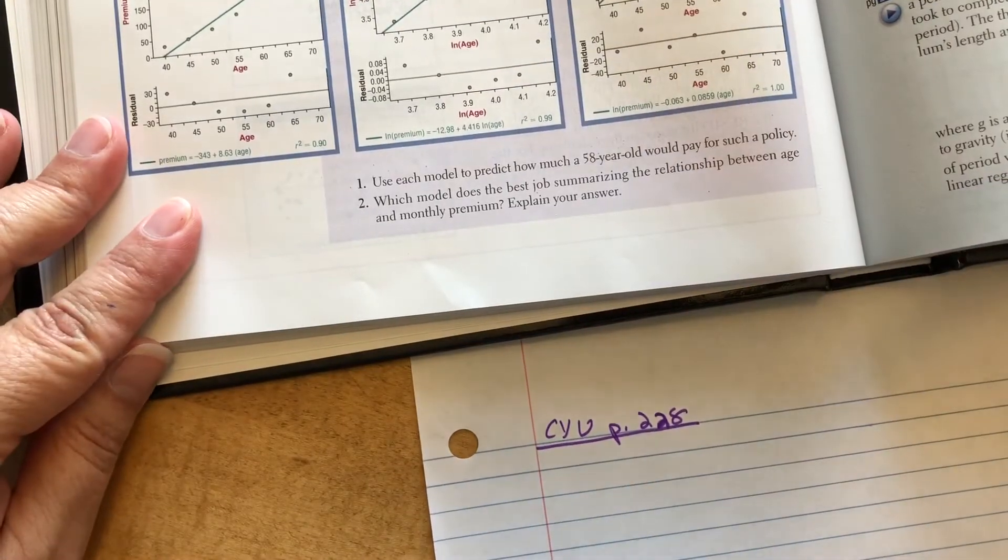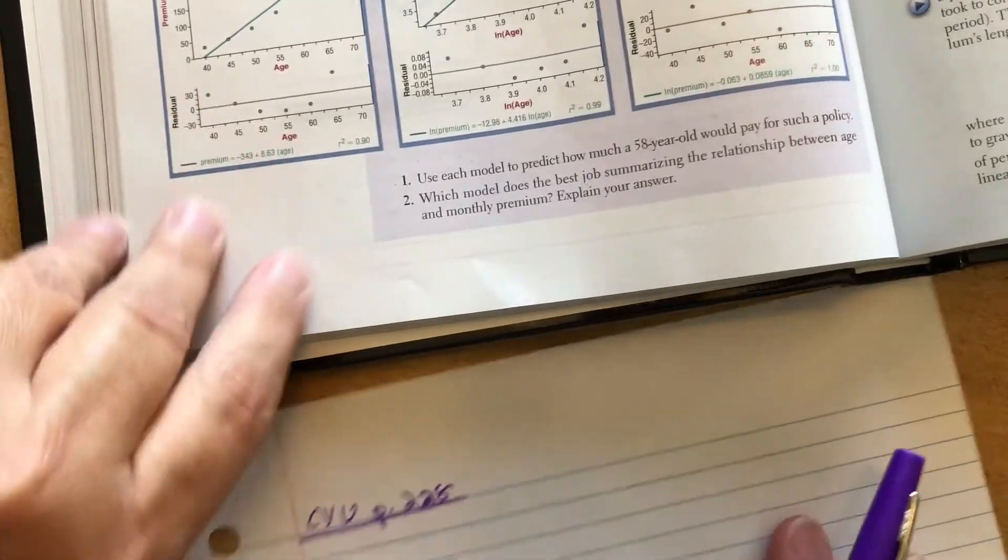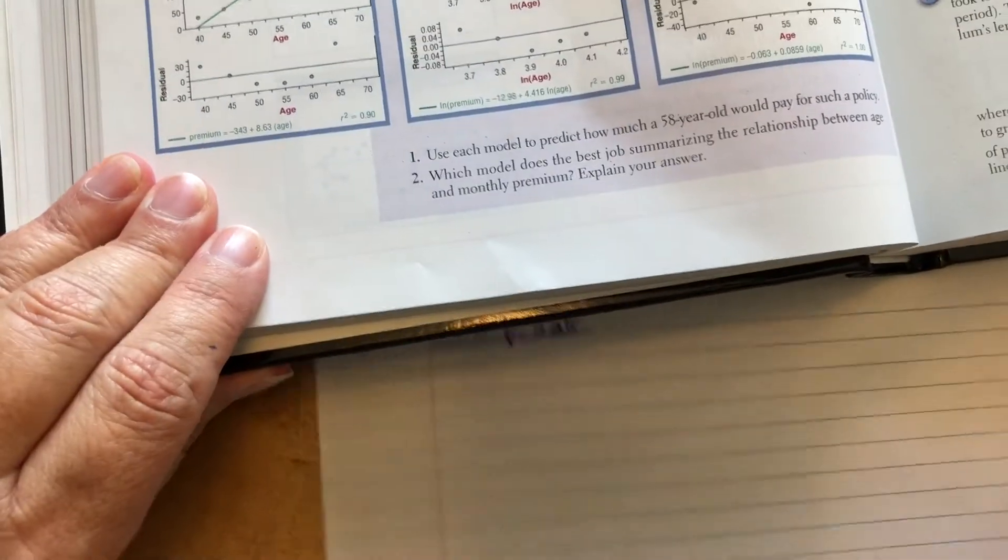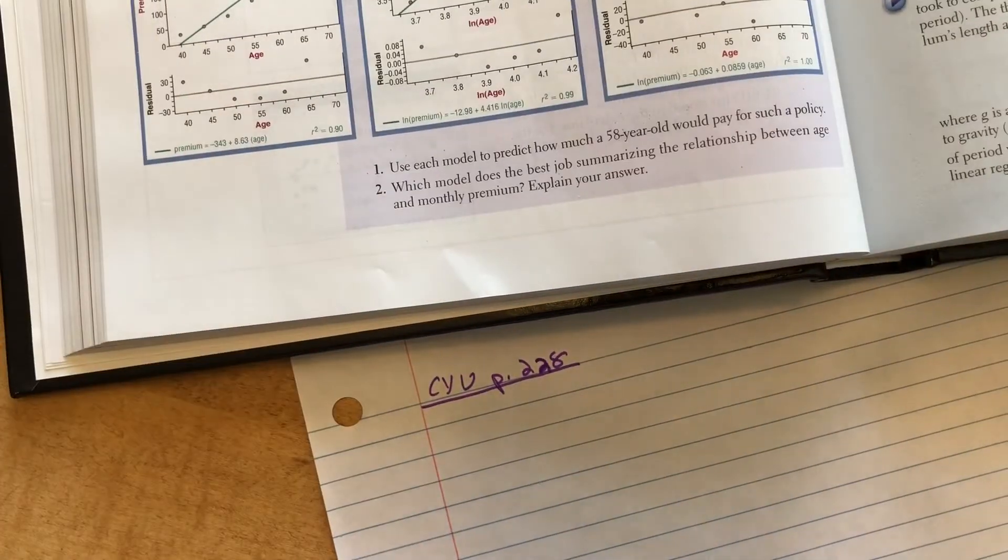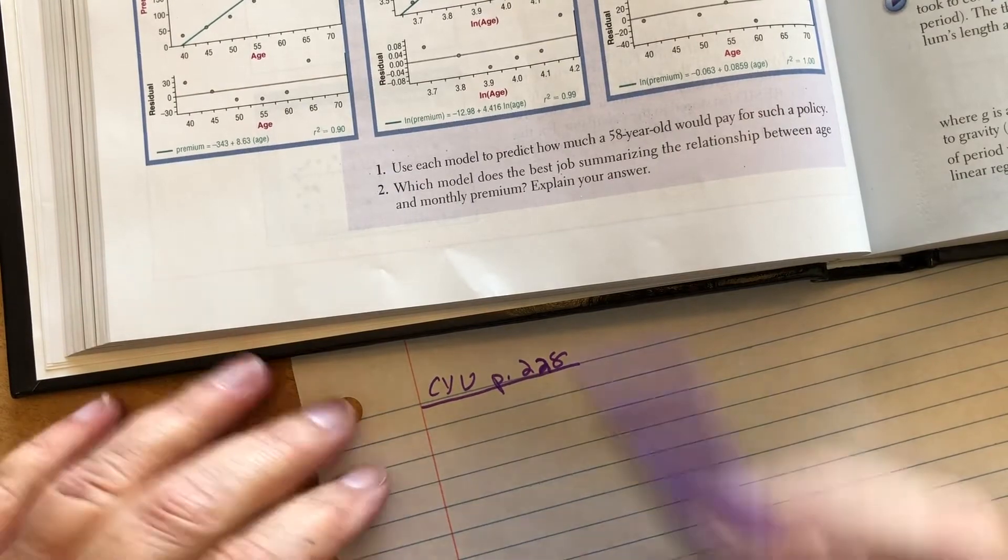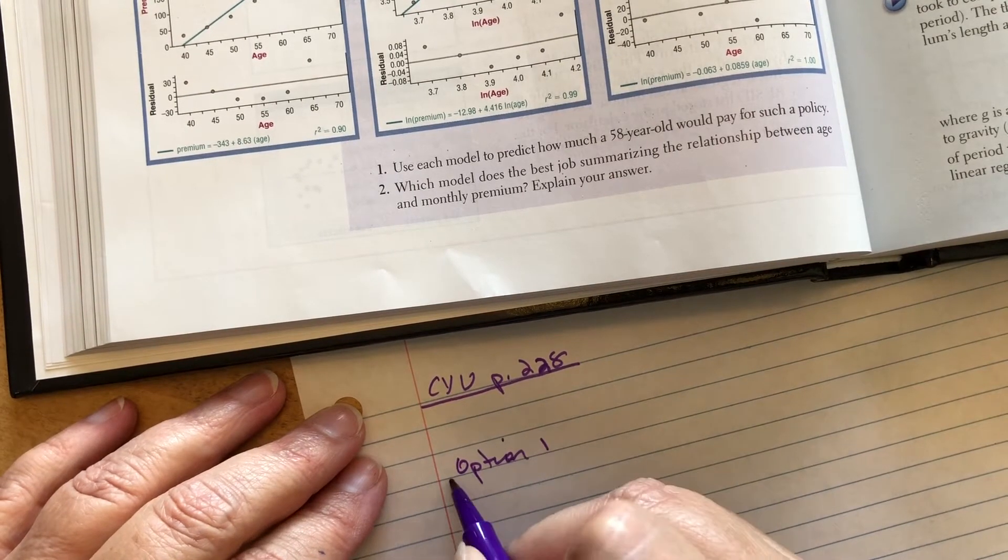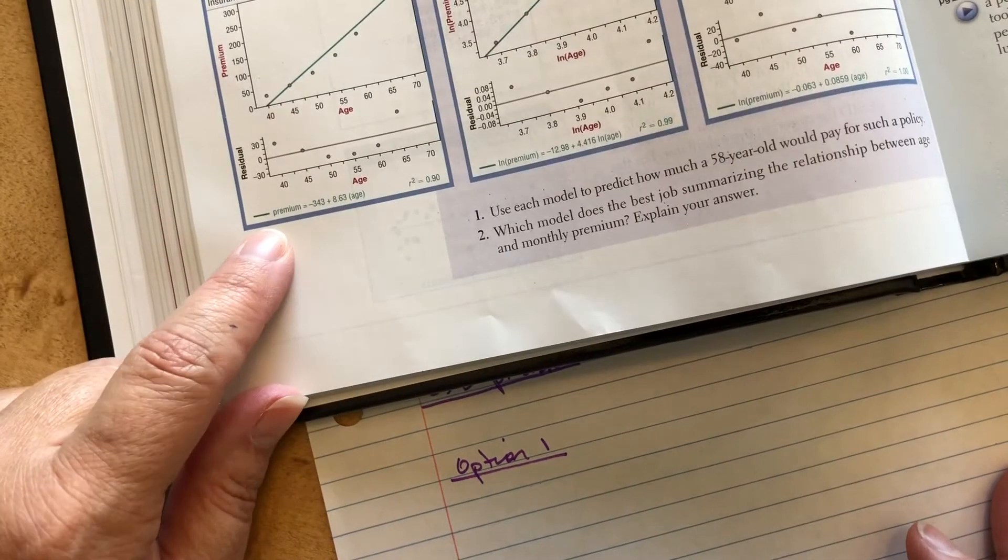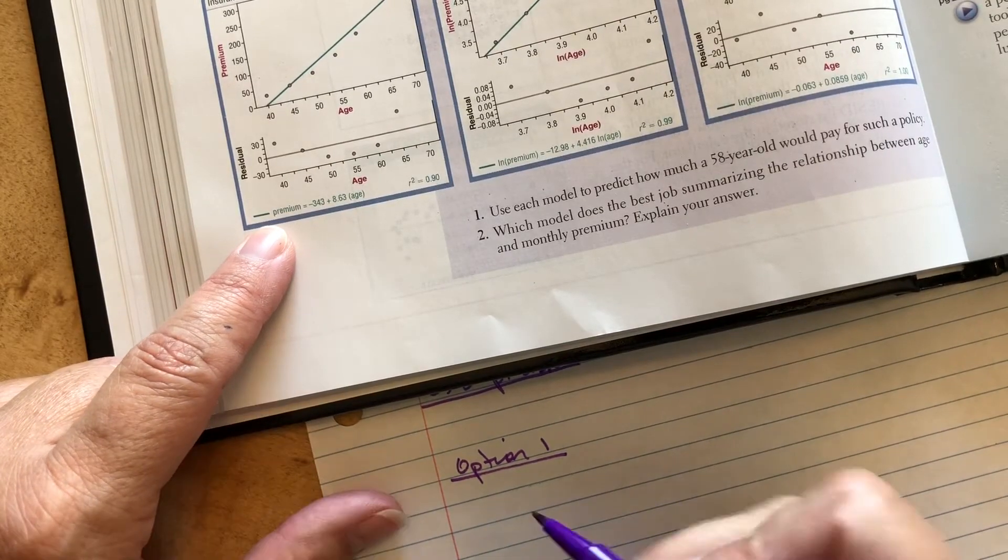So let's do that first. Can you guys see that? I know the book kind of causes a glare, or shadow, rather. Option one, there's my least squared regression line for option one.